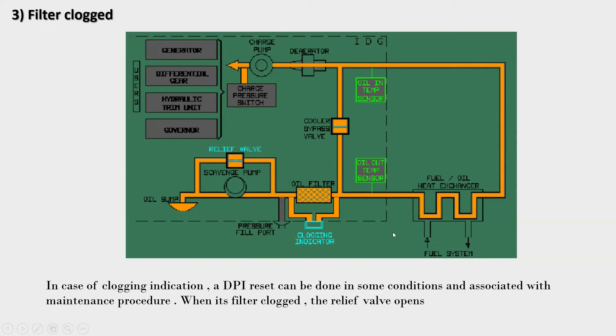Here is the clogging indicator. In case of clogging indication, the DPI reset can be done in some conditions and is associated with maintenance procedures. When the filter is clogged, the relief valve also opens.